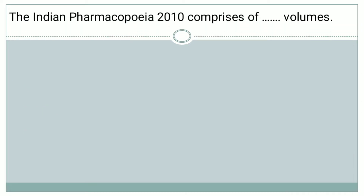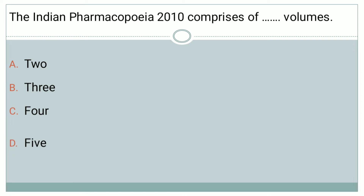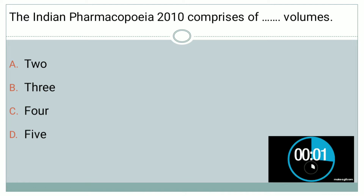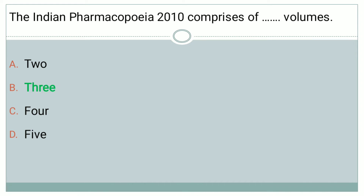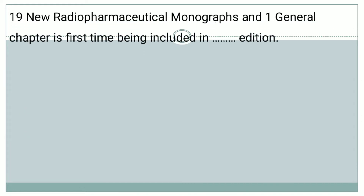The next question: The Indian Pharmacopeia 2010 comprises of Dash volumes. Options: A: 2 volumes, B: 3 volumes, C: 4 volumes, D: 5 volumes. The right answer is Option B, that is 3 volumes.